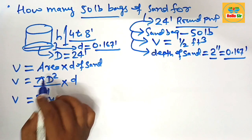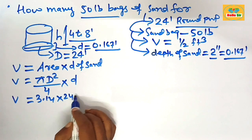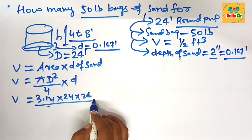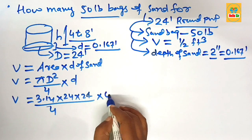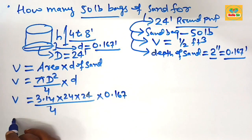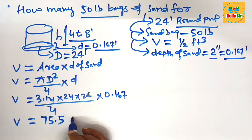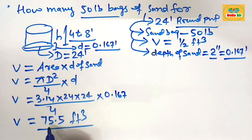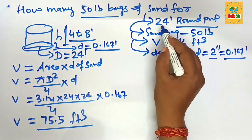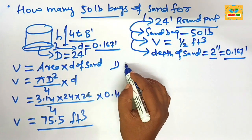Putting in all the values: pi equals 3.14, d is the diameter of the pool which is 24, so 3.14 × 24 × 24 ÷ 4, multiplied by the depth of sand 0.167. This comes out to approximately 75.5 cubic feet. It means you need approximately 75.5 cubic feet of sand for a 24-foot round pool.